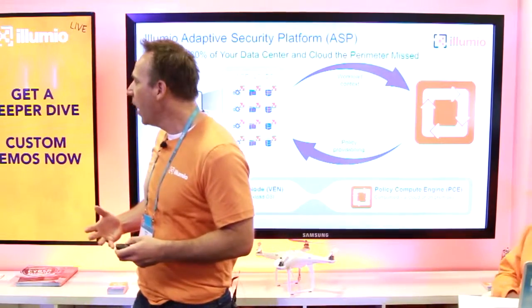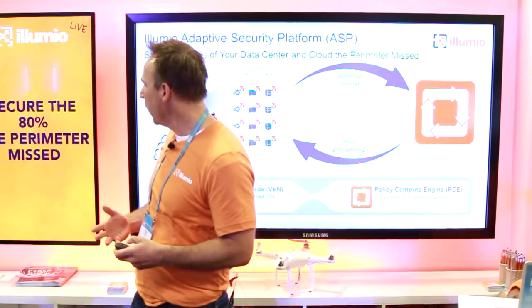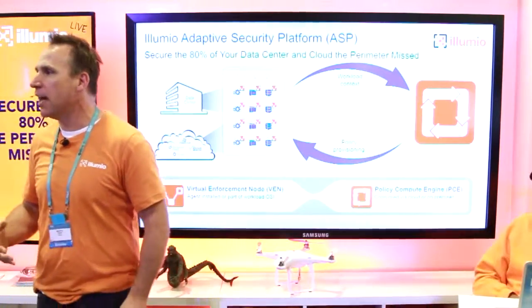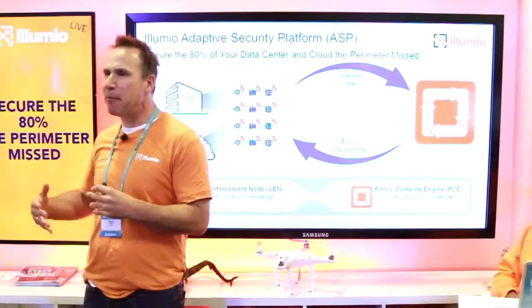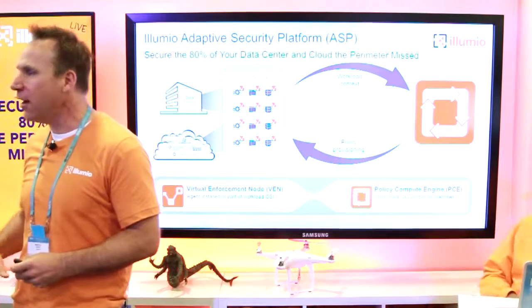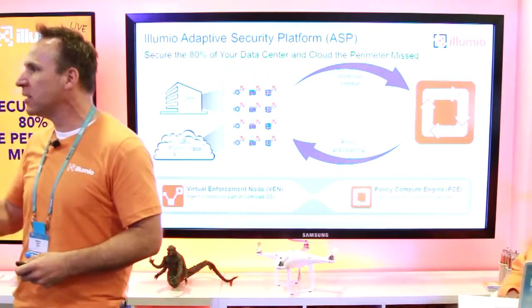So if you want to know what Illumio does, we basically secure the 80% of the traffic that your firewall missed. If you think about what we do, we spend about 90% of our traffic security dollars to secure 20% of the traffic. And most of the awesome hacks, most of the ones that work, they hit behind the firewall.